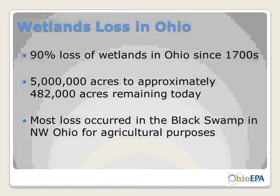Wetland loss in Ohio is significant. It's estimated that around 90% of the wetlands in Ohio have been lost since the 1700s when settlers were inhabiting the state. Most of those losses are in the Black Swamp area of northwestern Ohio. Out of approximately 5 million acres that once existed, only about 482,000 acres remain today.